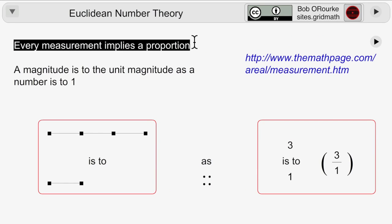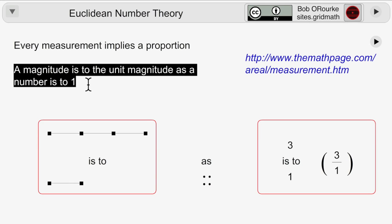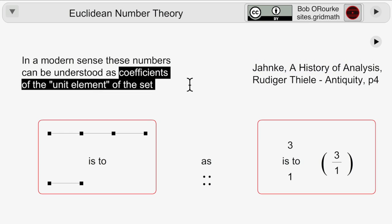Measurements imply a proportion. A magnitude is to the unit magnitude as a number is to 1. And the numbers in this proportion, in the modern sense, could be thought of as the coefficients of the unit element of the set.